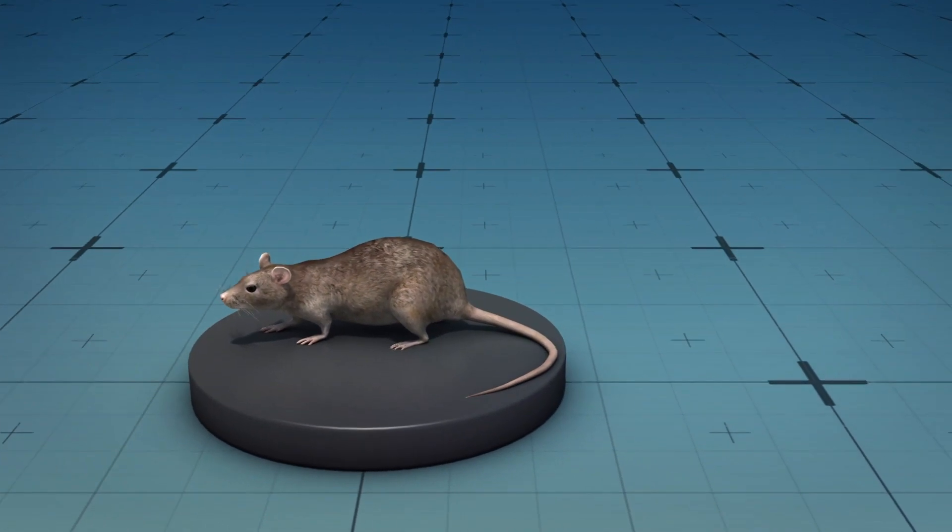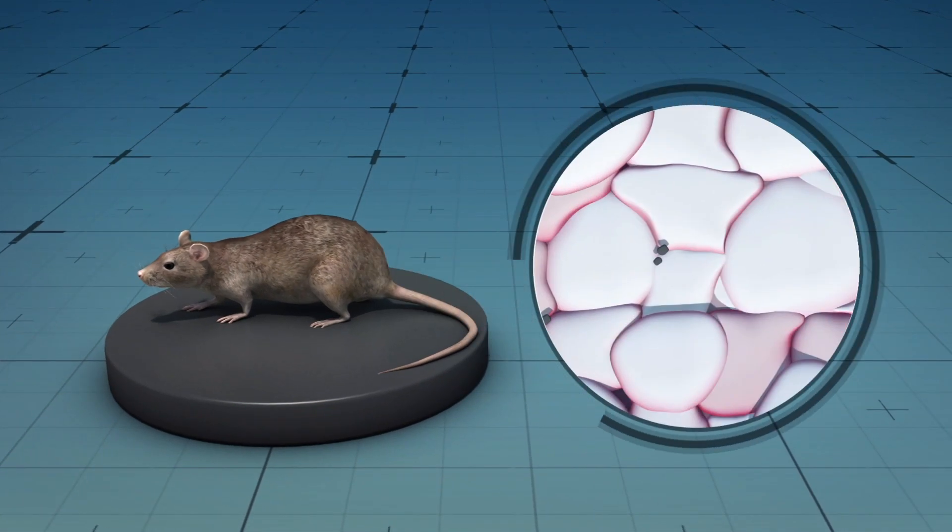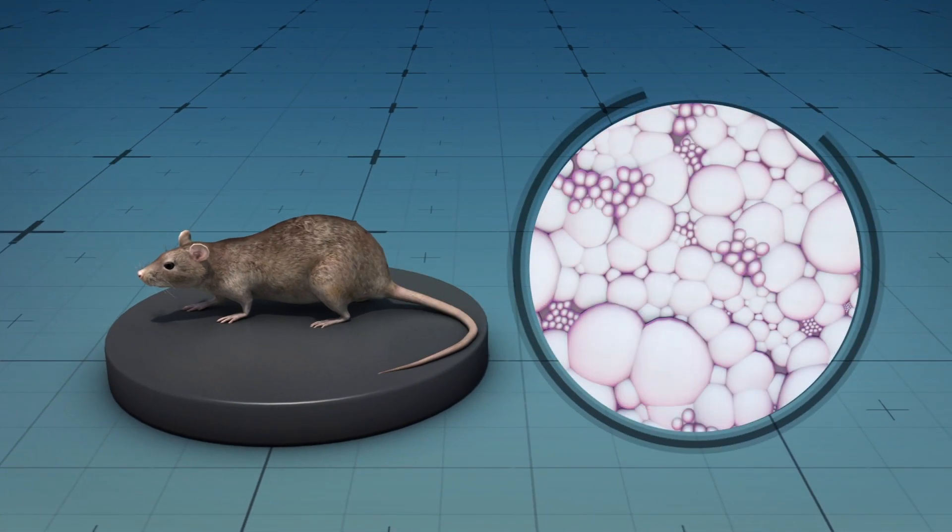Researchers discovered that increased levels of the protein caused white fat to become beige, or turn brown, burning more calories and generating more energy as a result.